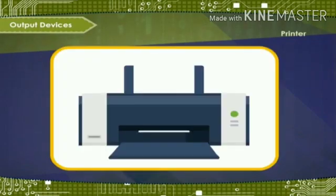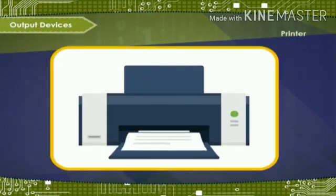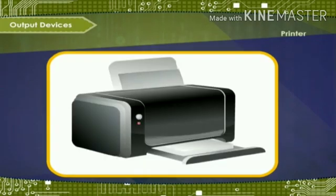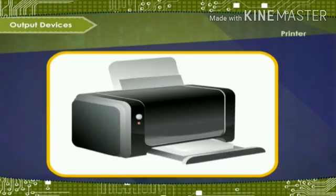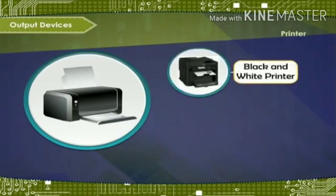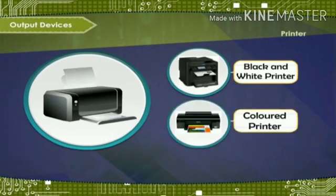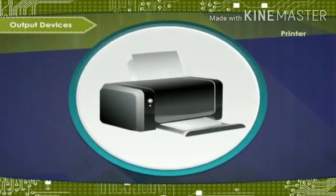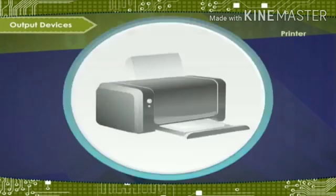Printer gives the output in printed format. The printed output is called the hard copy. The printer can be either black and white or colored. Printers are classified into different types.